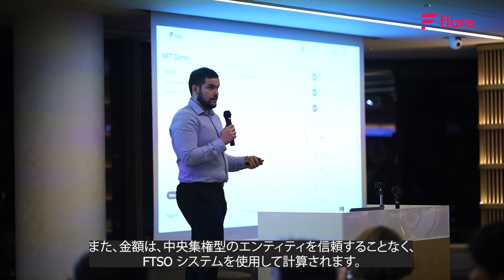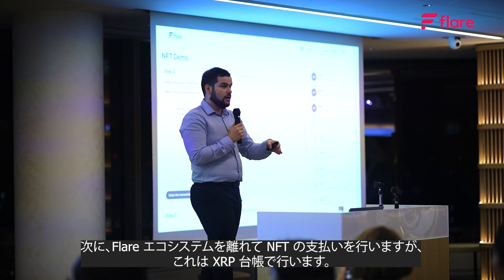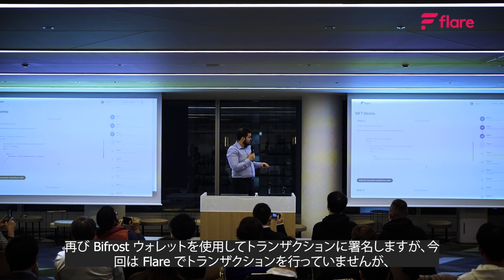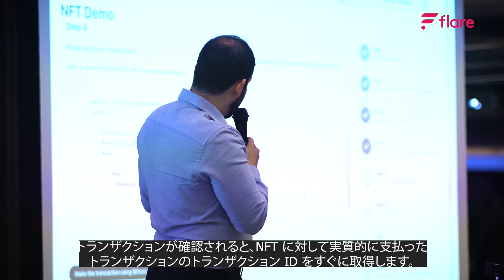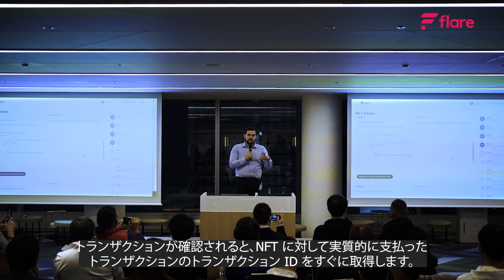Now we're going to leave the Flare ecosystem and make the payment for our NFT on the XRP Ledger. We again sign the transaction using Bifrost Wallet, but this time we're paying with almost 200 XRP on the XRP Ledger. Once the transaction is confirmed, we immediately get the transaction ID of the transaction that effectively paid for the NFT.